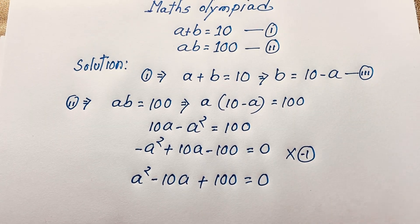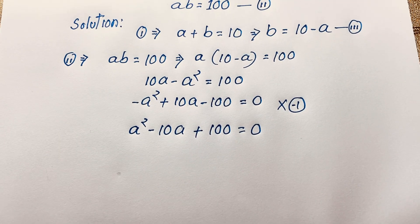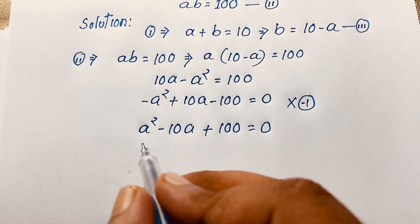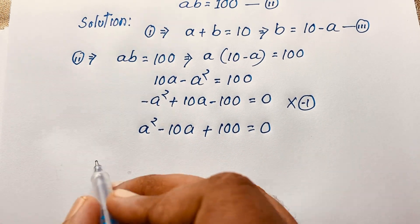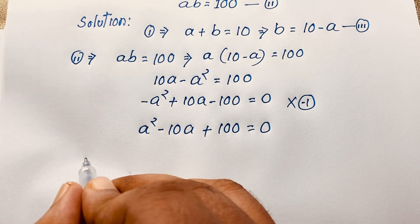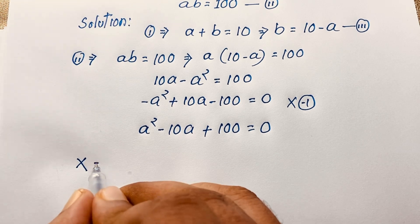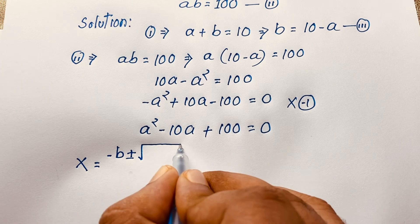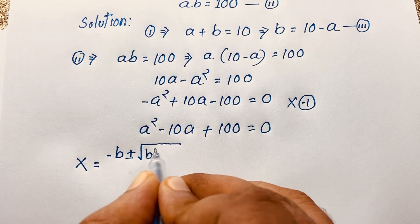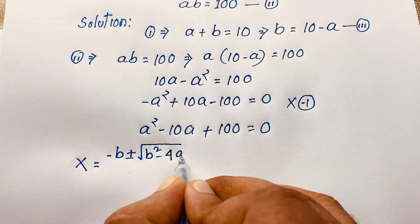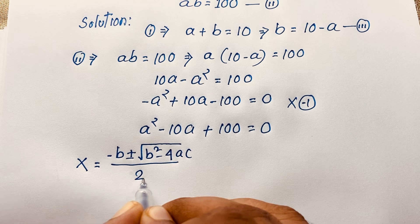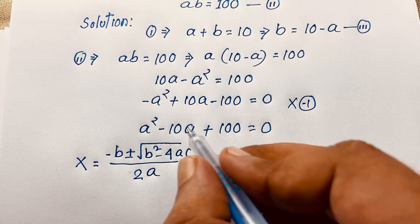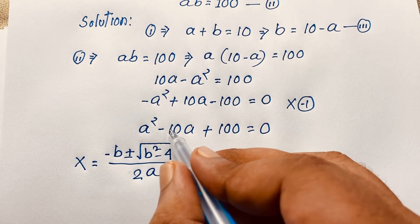Now we apply the quadratic formula: x equals negative b plus or minus square root of (b squared minus 4ac), all over 2a. Applying this formula here: a equals 1, b equals negative 10, and c equals 100.